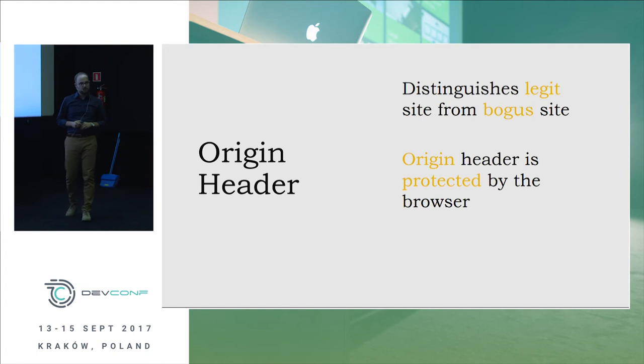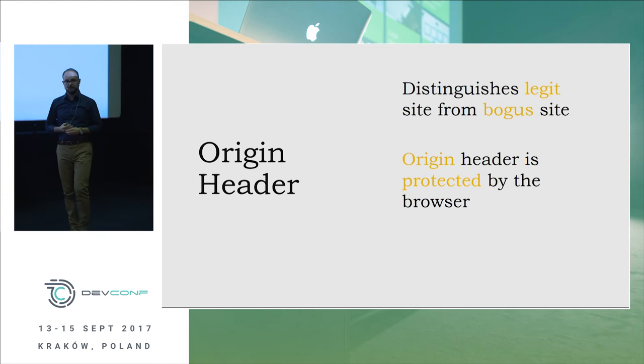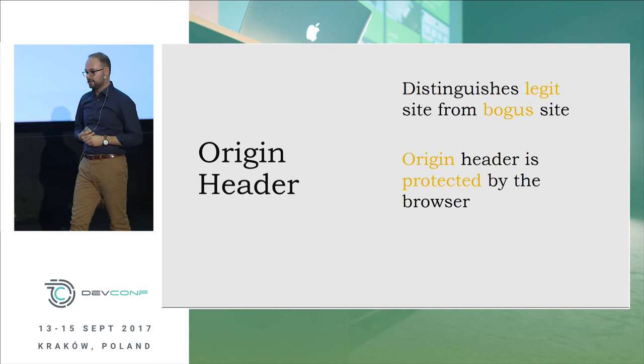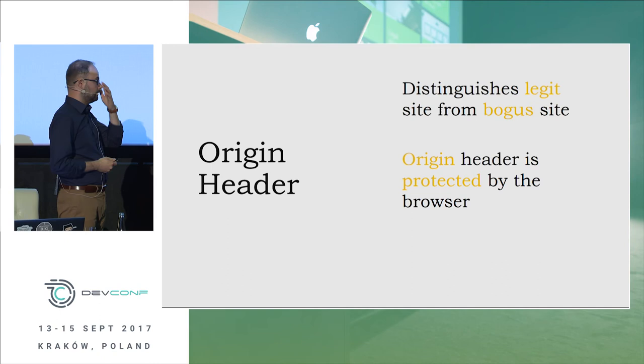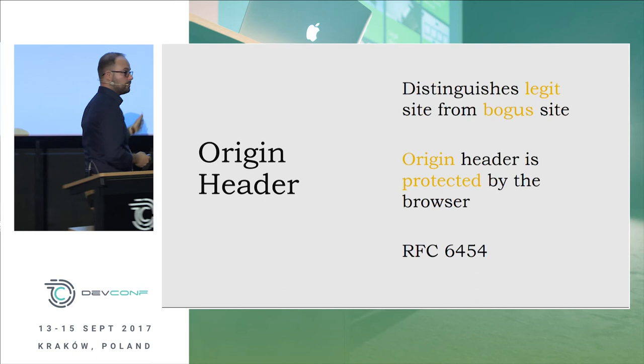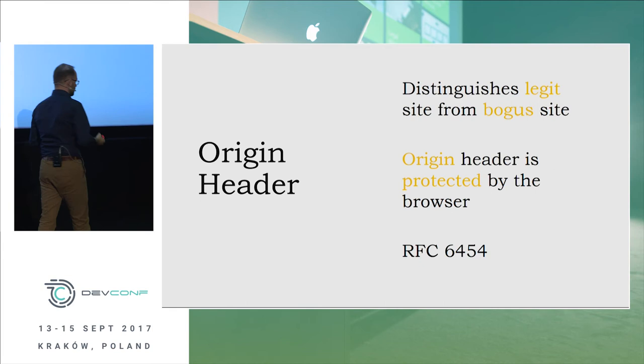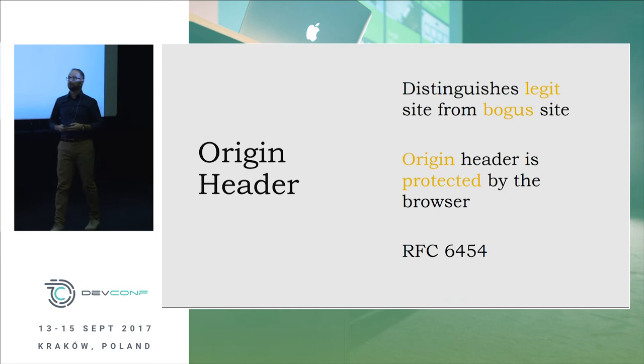The Origin header allows us to distinguish whether the form comes from a legitimate site or a bogus site. Importantly, some HTTP headers like Cookie and Origin are heavily protected by the browser — you can't access them from JavaScript, for example. This is a very mature mechanism that has been standardized with a readable RFC and has broad browser support.